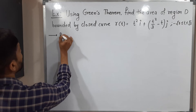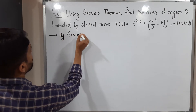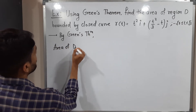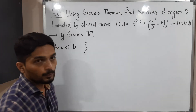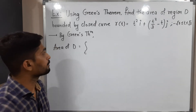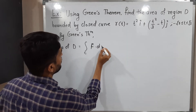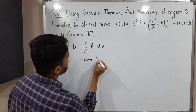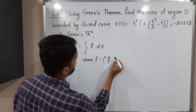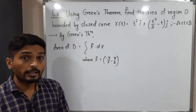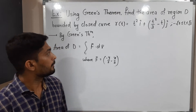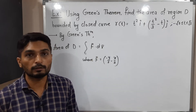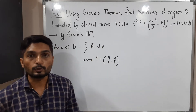By Green's theorem, we can write the area of region D is equal to the line integral over C, where C is the boundary of that region D, and the integrand is f̄ · dr̄. Here f is a fixed vector field where f̄ equals (-y/2, x/2). So area can be calculated by solving this line integral. If you take this vector-valued function f̄ and C is the boundary of region D, then we will have the area of D.